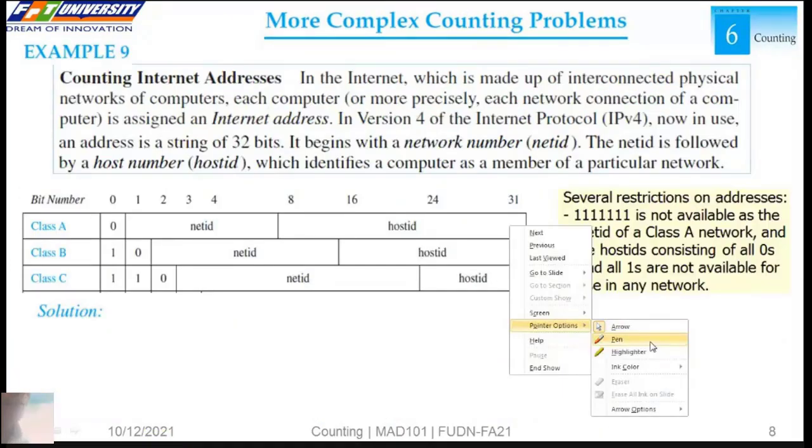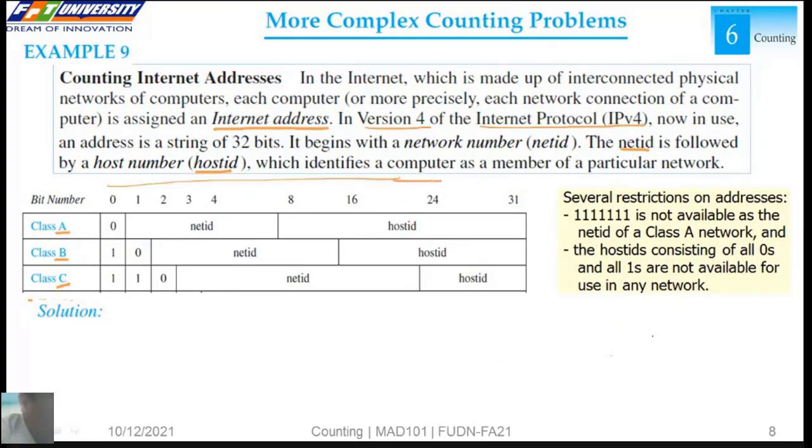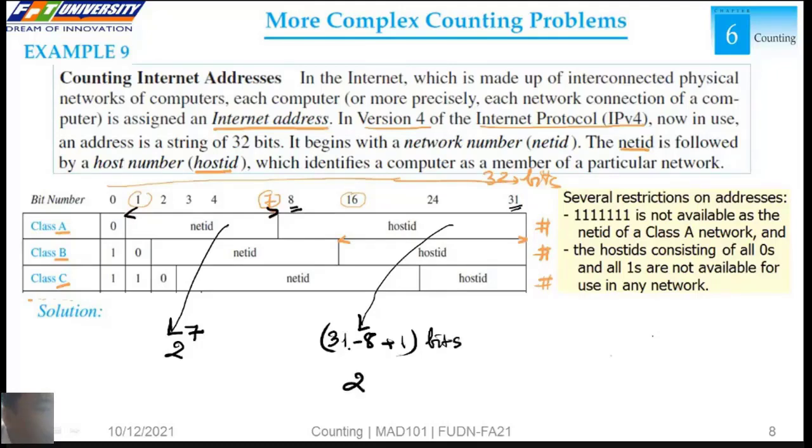We want to count the number of internet addresses. We have 32 bits. We use bits 1 to 7 for the network ID of Class A. We have 7 bits, so 2 to the power of 7. From bits 8 to 31, we have 2 to the power of 24.